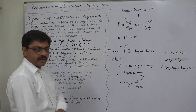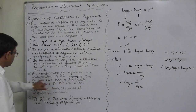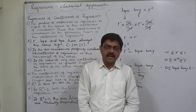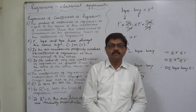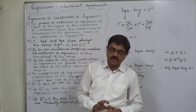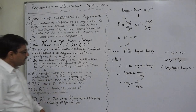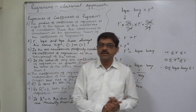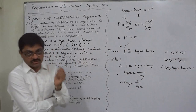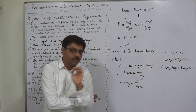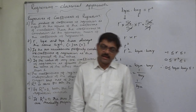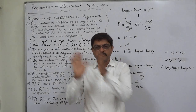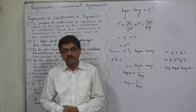Property five: the coefficients of regression are independent of the change of origin but not of the change of scale. Change of origin means adding or subtracting any constant value from the original values. Regression coefficients are independent of change of origin — calculating them with or without change of origin for the same data gives the same answer. Change of scale means multiplying or dividing the original values by a constant value.